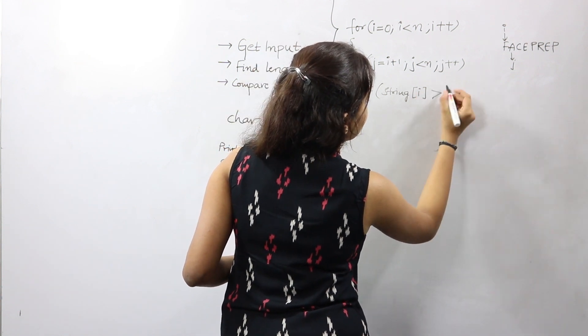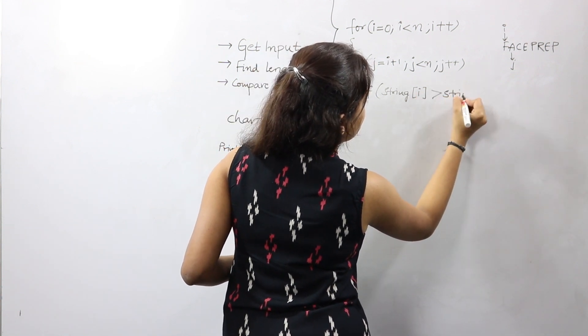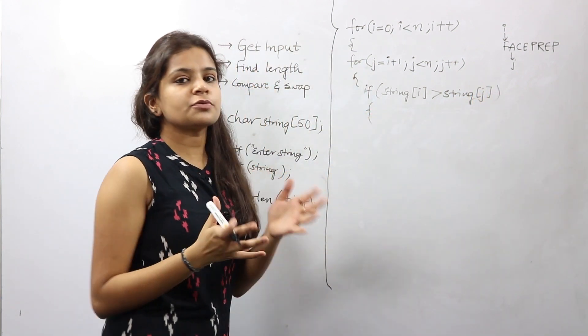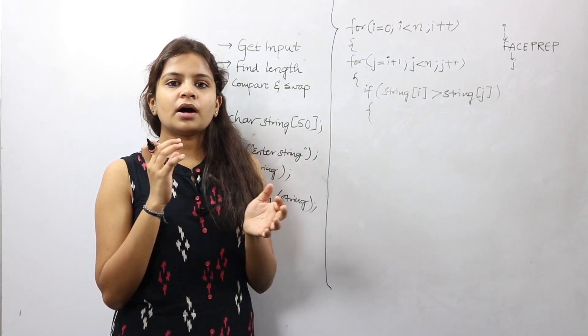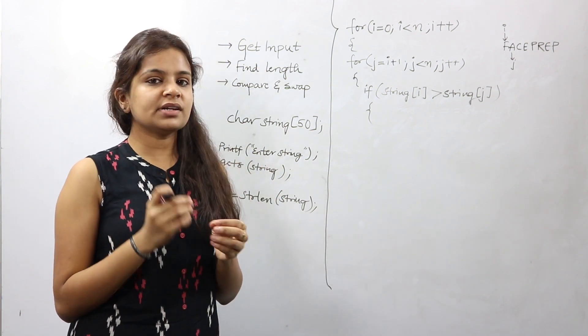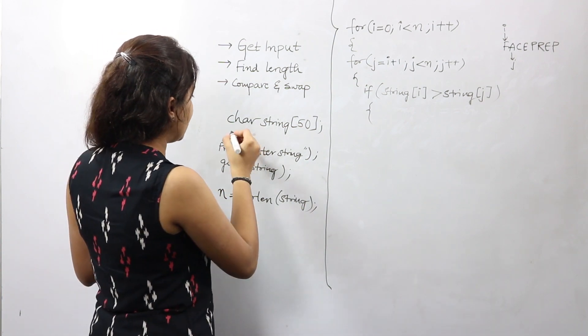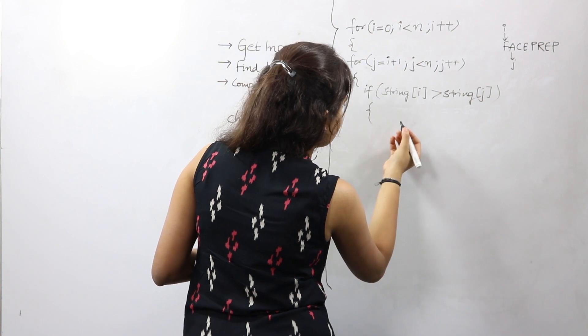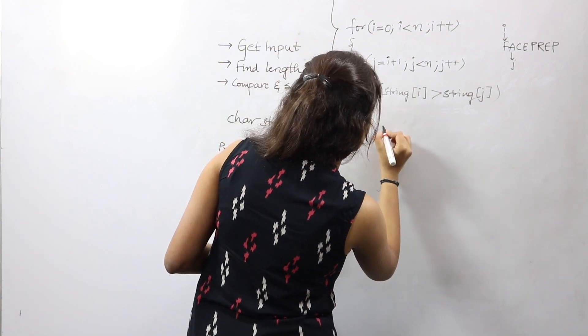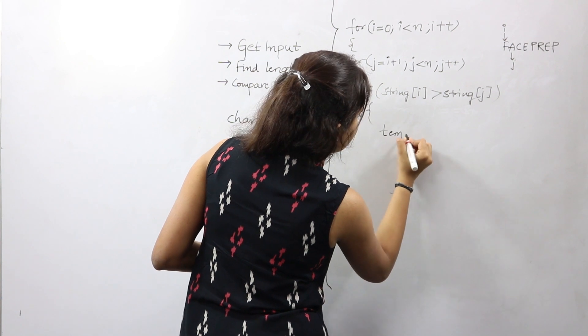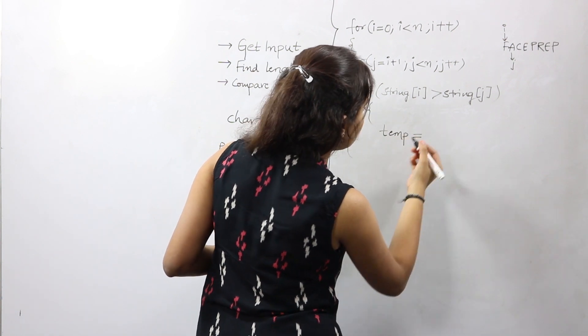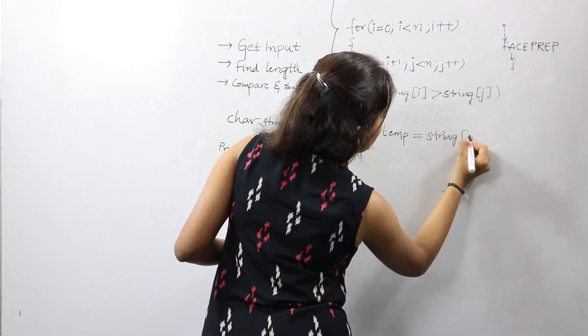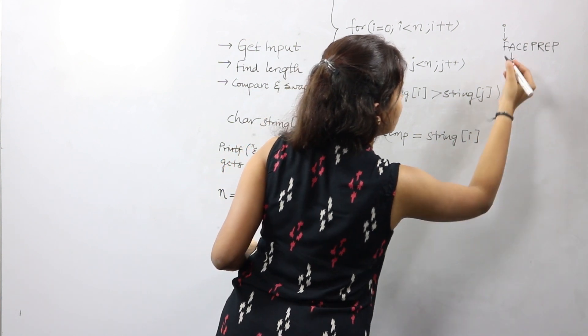At any given point if string[i], that is currently F, is greater than string[j], then we're supposed to swap the characters. To do the swapping we would be using a temporary variable. You guys can declare it as temp.